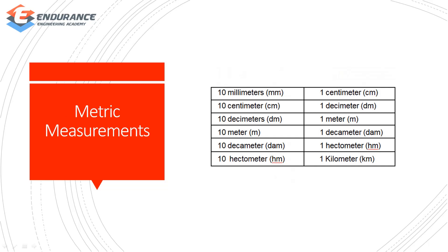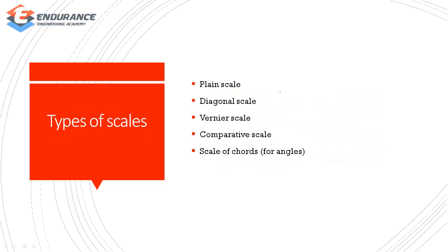Metric measurement units include 10mm, 10cm, 10 decimetre, 10 metre, 10 decimetre, and 10 hectometre. The types of scales are: plane scale, diagonal scale, vernier scale, comparative scale, and scale of chords.